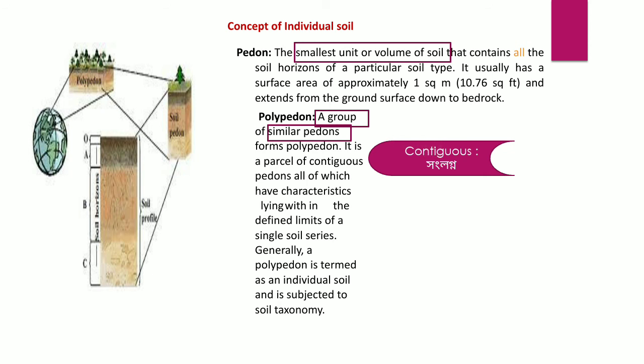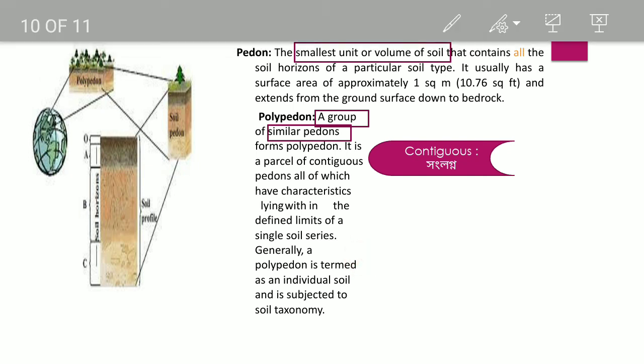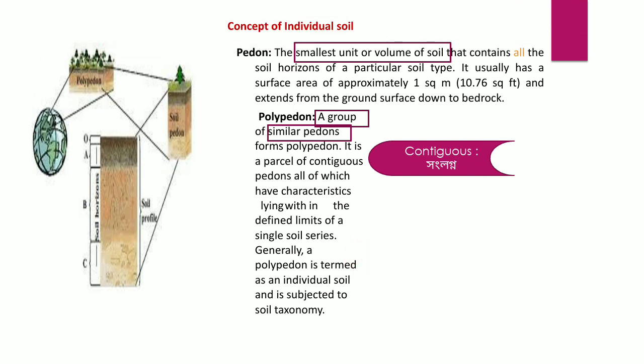A polypedon is a group of similar pedons. It is a parcel of contiguous pedons that always have characteristics lying within the defined limits of a single soil series. A polypedon is termed an individual soil and is subjected to soil taxonomy.